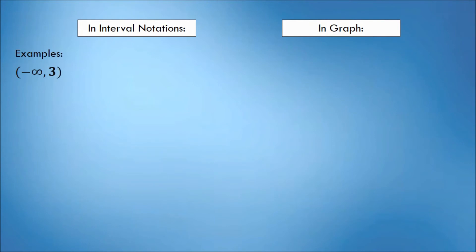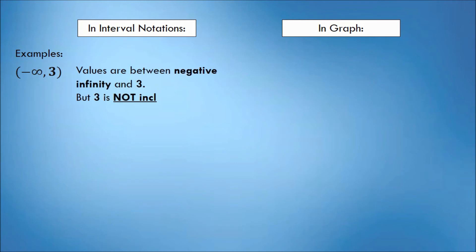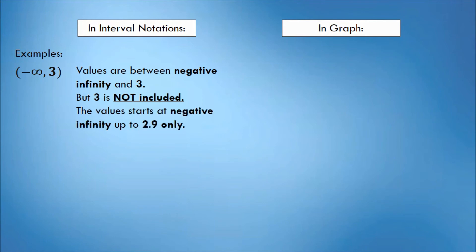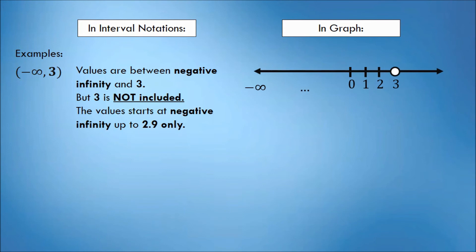One more example with infinity: suppose we have the interval (-∞, 3). This interval indicates that the values included are between negative infinity and 3, but 3 is not included because of the parenthesis symbol. Meaning, the value starts at negative infinity up to 2.9 only. In the graph, we will put a hollow circle on 3 because 3 is not included. The solution set is from negative infinity up to 2.9 only.